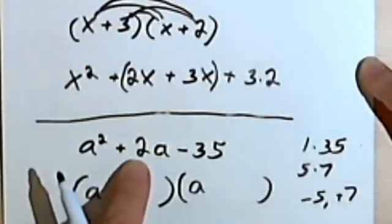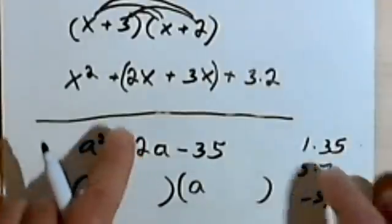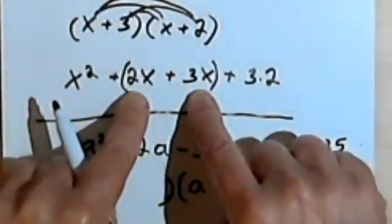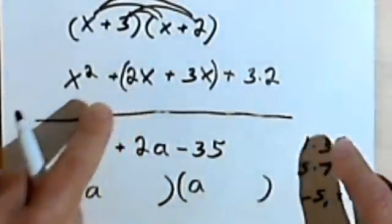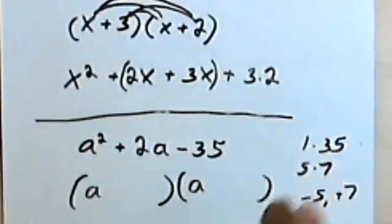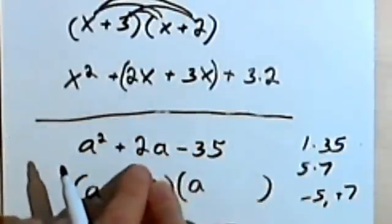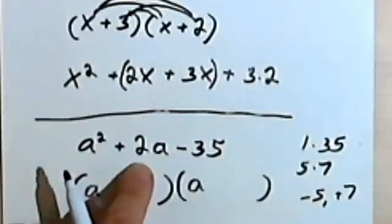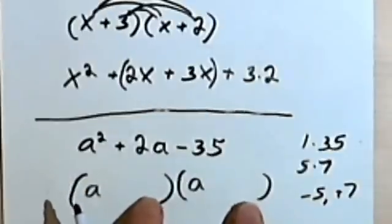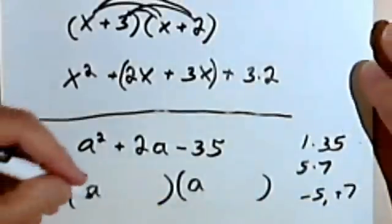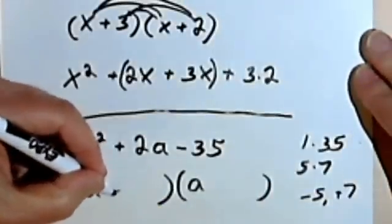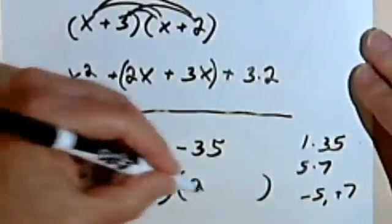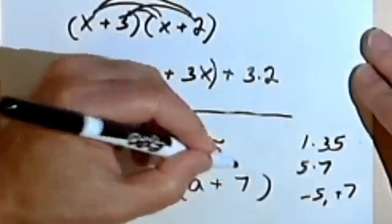And you remember this positive 2 came about from combining the two middle terms, which is the same as saying the coefficient of this negative 2 is going to be what happens when you combine the last terms here. So what that basically means is I want a negative 5 and a positive 7.